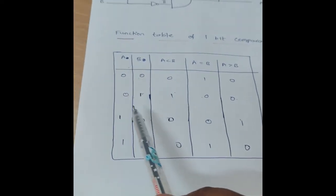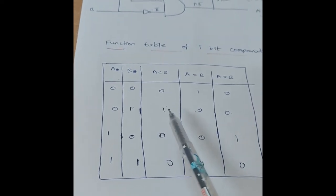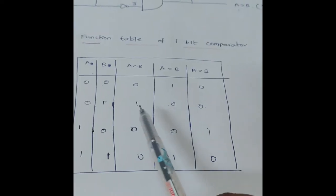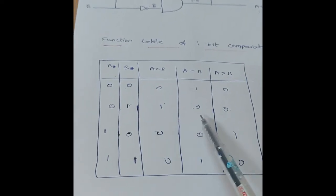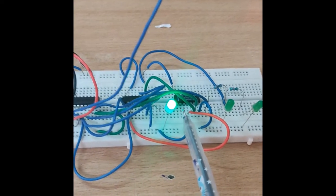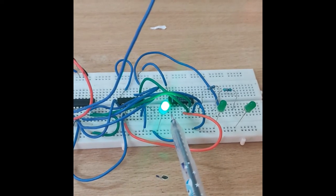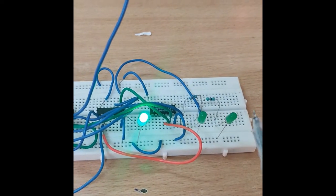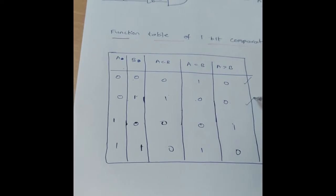Second combination — inputs are zero one. The output A less than B is one and the remaining are zero. The A less than B LED is on, meaning one, and the remaining are zero. These combinations are verified.